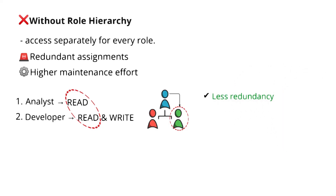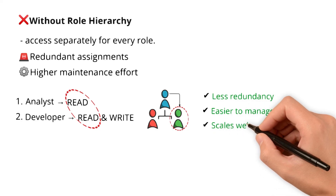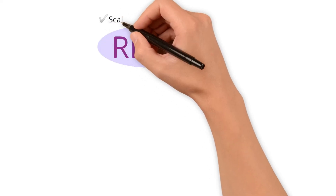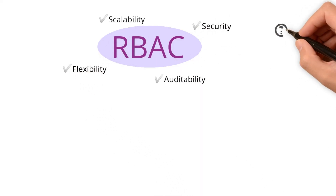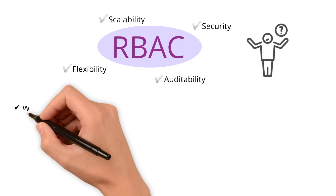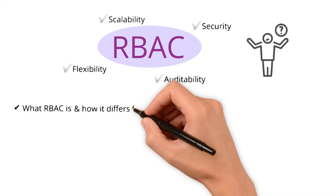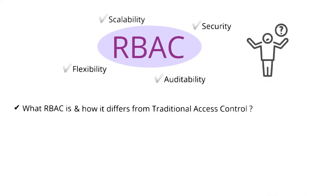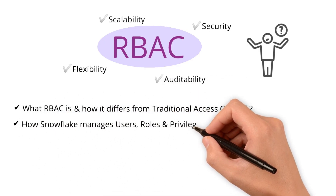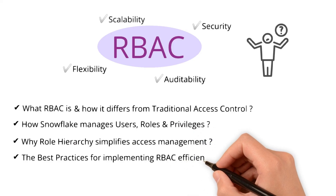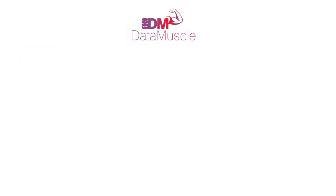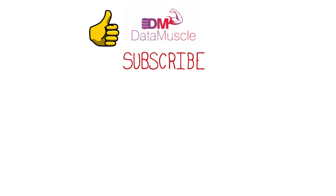This helps with less redundancy, easier management, and scales well as your team grows. All in all, the advantages of RBAC in Snowflake are scalability, security, auditability, and flexibility. Now you know what RBAC is and how it differs from traditional access control, how Snowflake manages users, roles, and privileges, why role hierarchy simplifies access management, and the best practices for implementing RBAC efficiently. If you found this video helpful, like and subscribe for more Snowflake content.